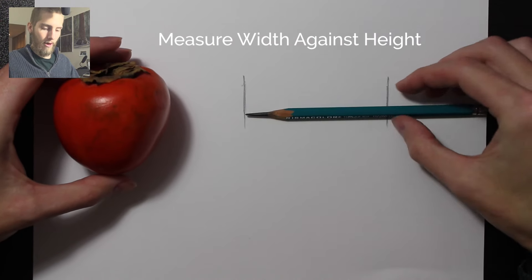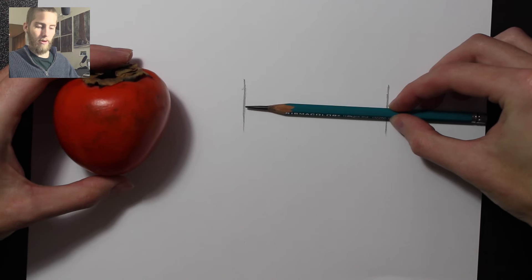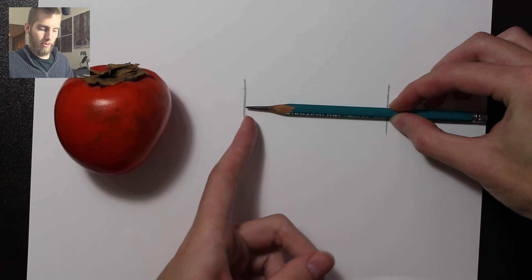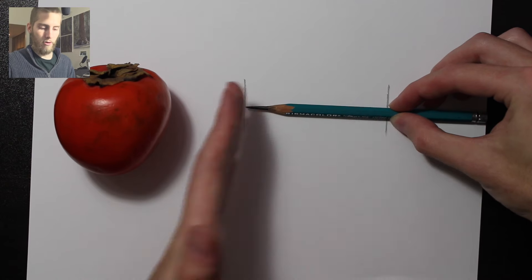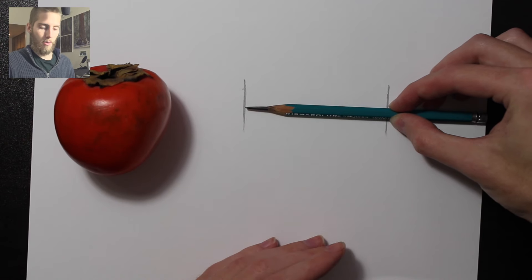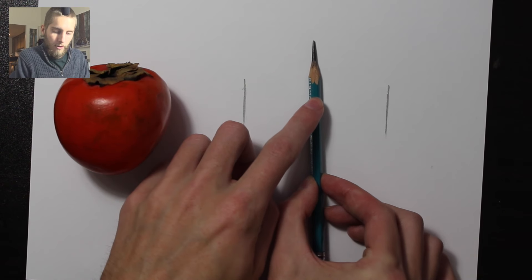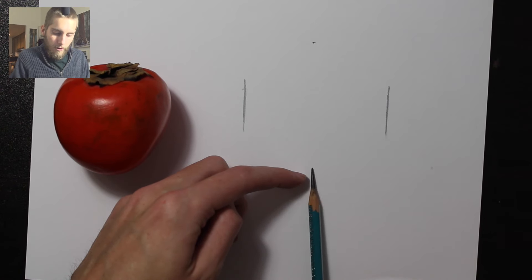Now that I have the width, I know I can make a little guide here, a little trick. I can take the width that I've determined on my paper, rotate it vertically, and create a guideline there and then a guide mark here.